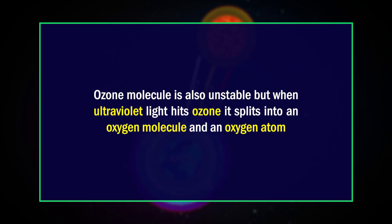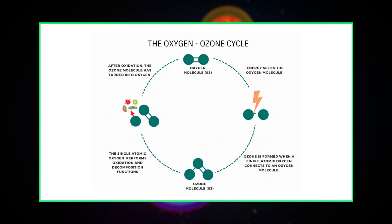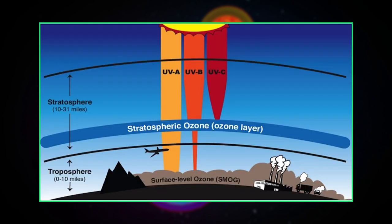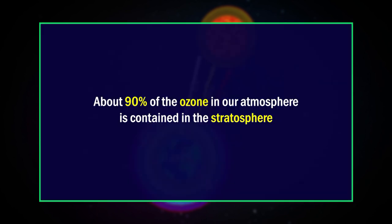The reason for this latitude and seasonal dependence is complicated, involving atmospheric circulation patterns as well as solar intensity. The ozone molecule is also unstable — when ultraviolet light hits ozone, it splits into an oxygen molecule and an oxygen atom. This is a continuing process called the ozone-oxygen cycle.